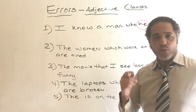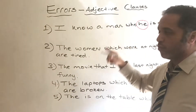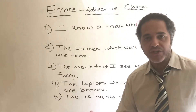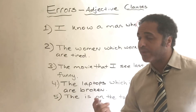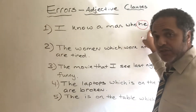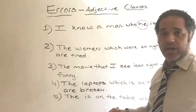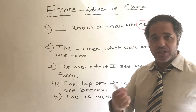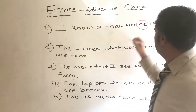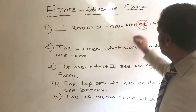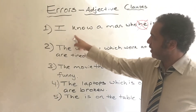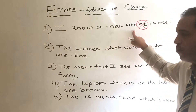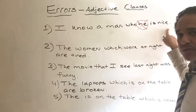Remember, when we use words like 'who,' 'that,' or 'which,' what they do is they replace the pronoun. So you never have to say 'he,' 'she,' or 'it.' You can get rid of that and simply say 'I know a man who is nice.'